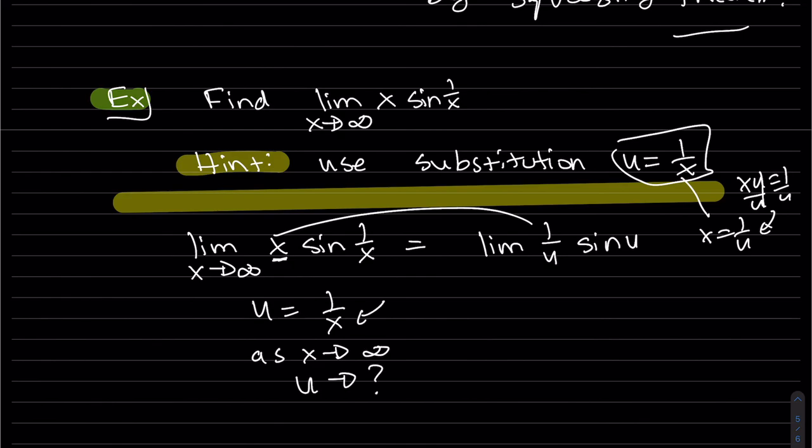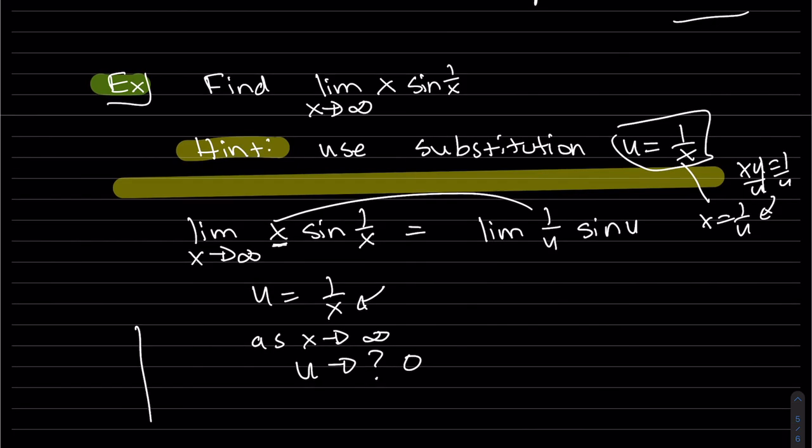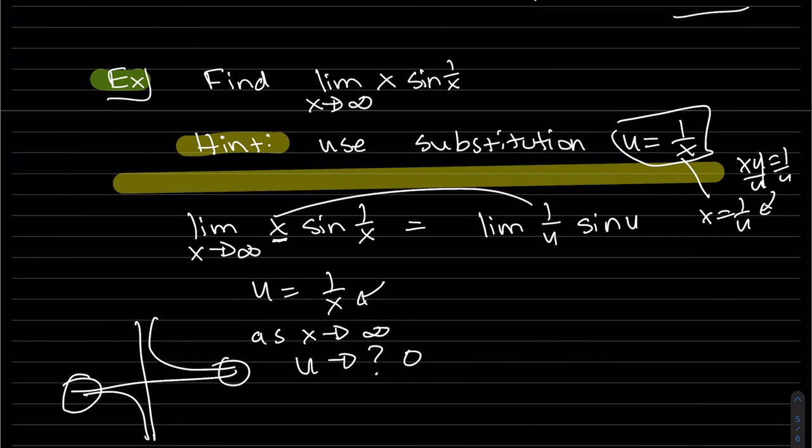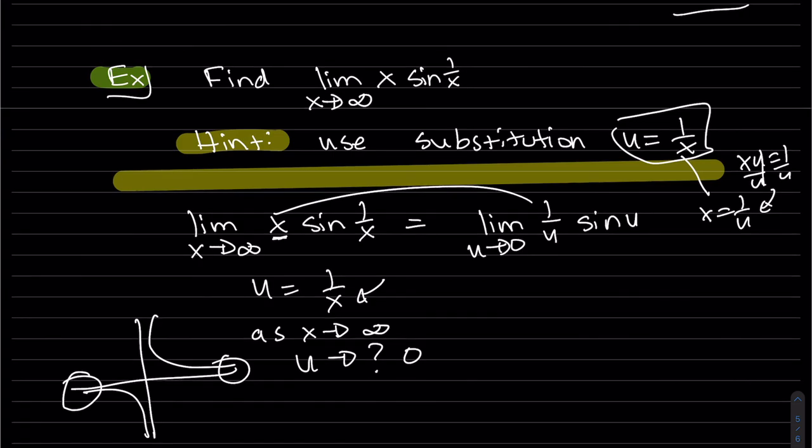Well, if I plug in infinity there, then u goes to 0. And if you want to sketch it, you could. There's our graph. We could see our end behavior has a horizontal asymptote of 0. u goes to 0. So now, if you don't recognize this, let me rewrite it so you do. What is that limit? That's 1. Pretty cool, huh? Okay, thanks for watching.